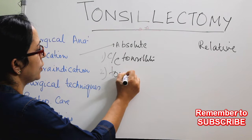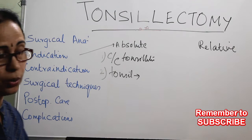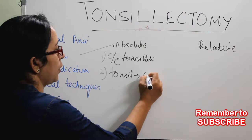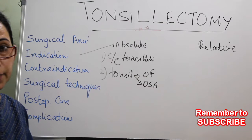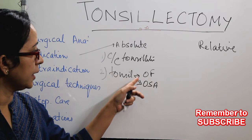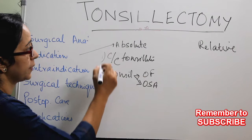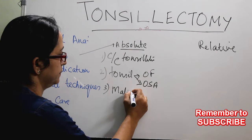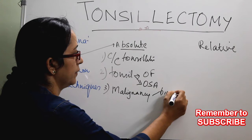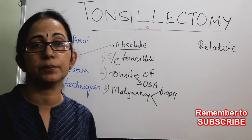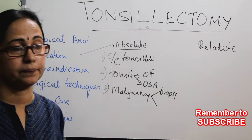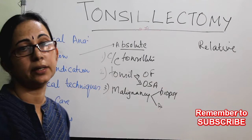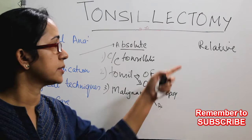The second absolute indication is tonsillar hypertrophy causing oropharyngeal problems — problems with swallowing, voice, or obstructive sleep apnea. The third absolute indication is biopsy for malignancy — both for taking biopsy and as part of treatment of proven malignancies of the oropharynx. These absolute indications cover both therapeutic and diagnostic purposes.